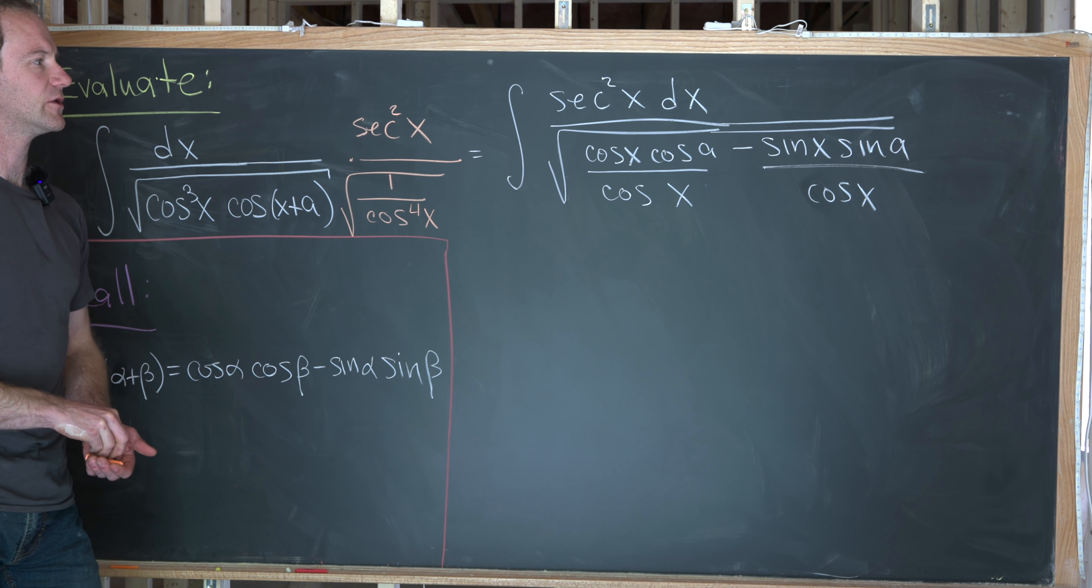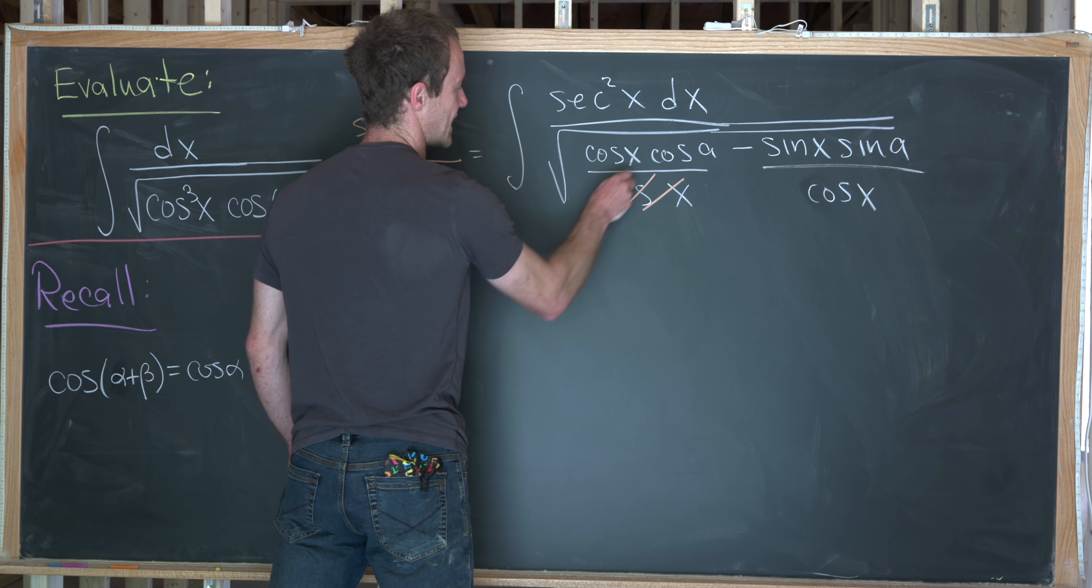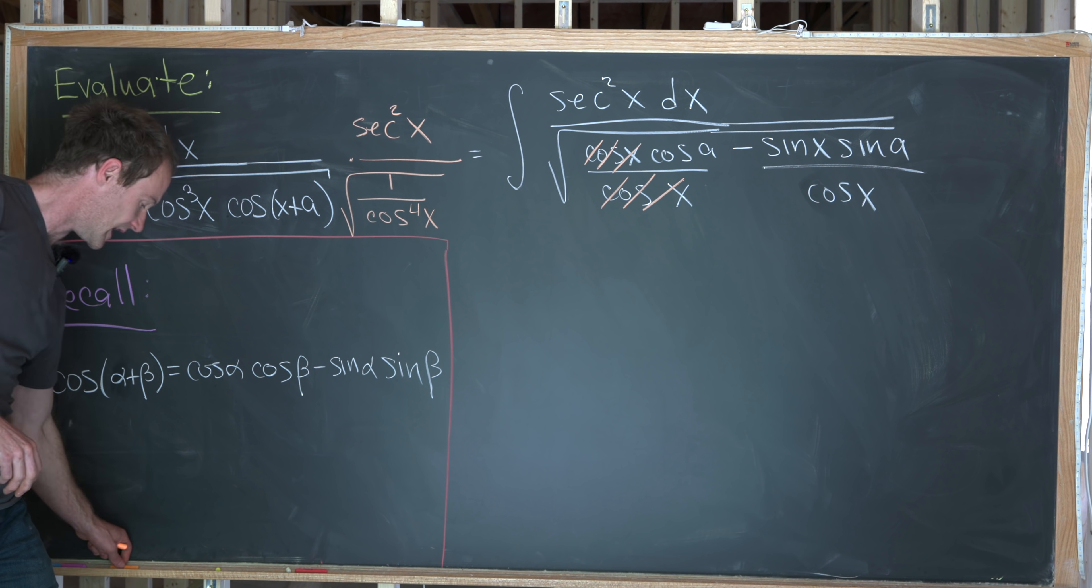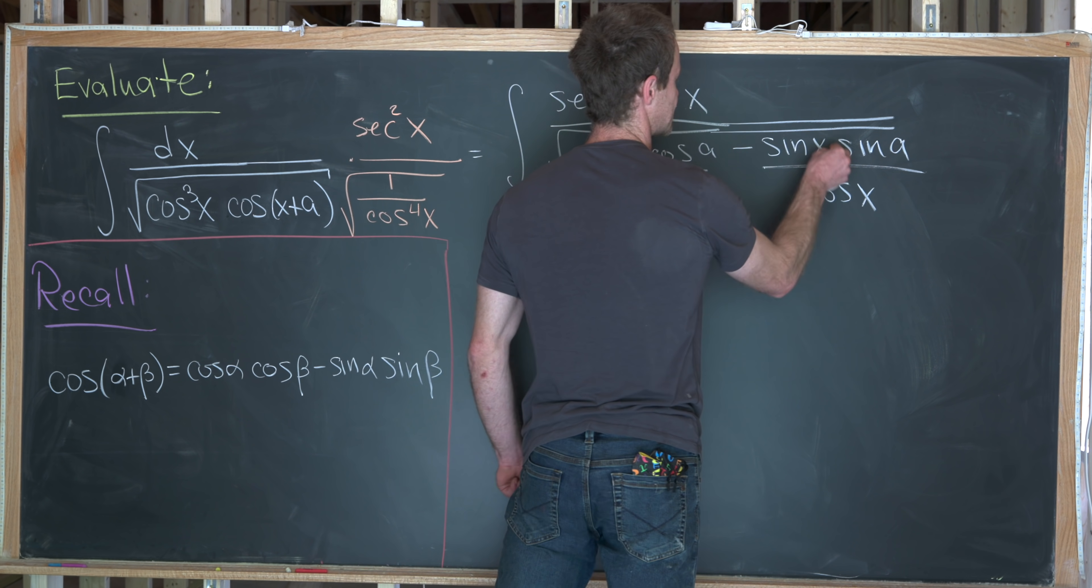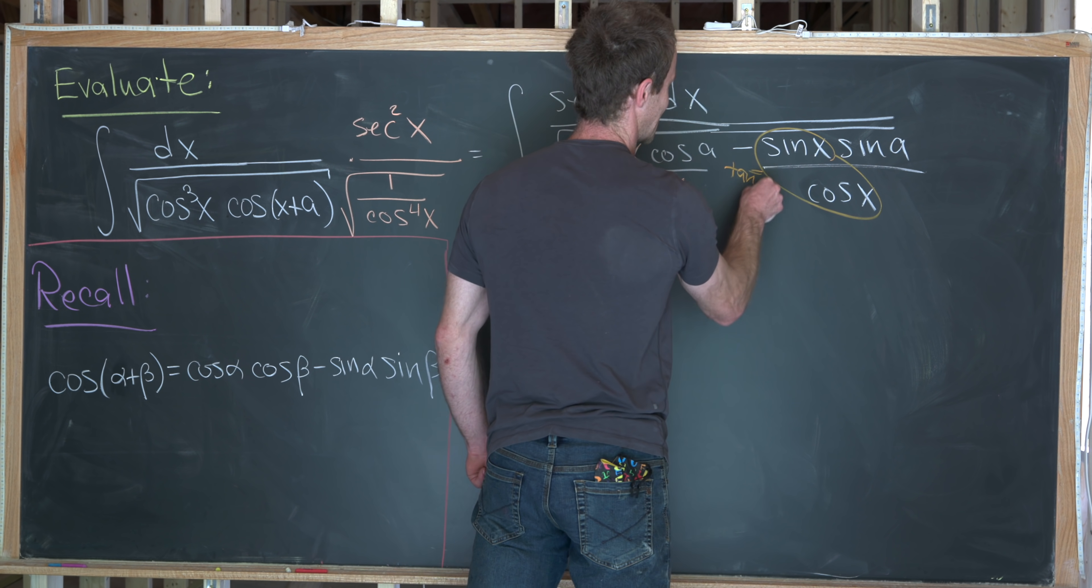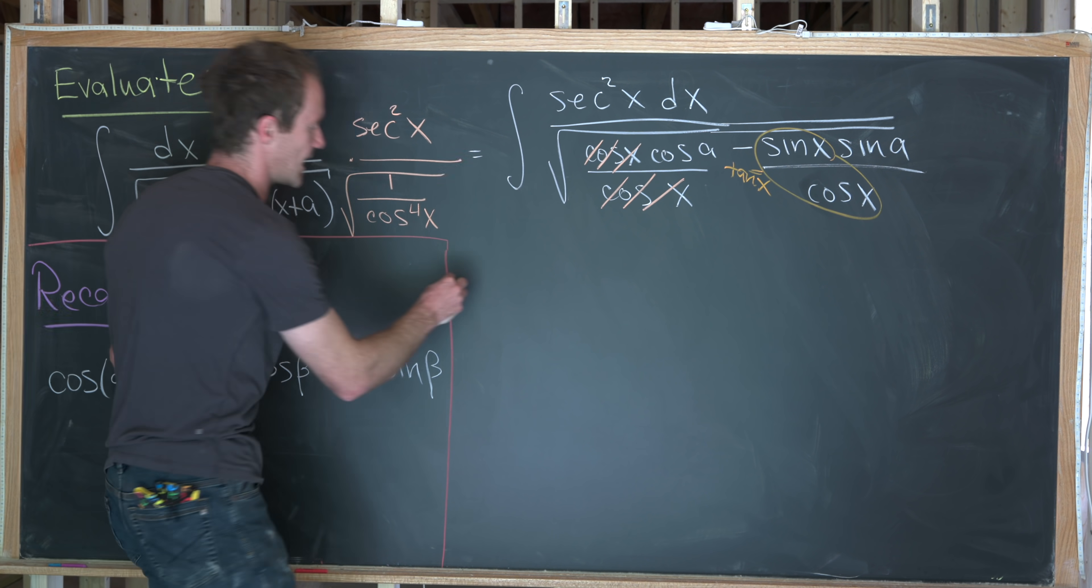But now notice some simplification can happen. This cosine x will cancel with this cosine x. So that's nice. And then this sine x over cosine x is the same thing as the tangent of x. So let's rewrite this so we see what we've got.